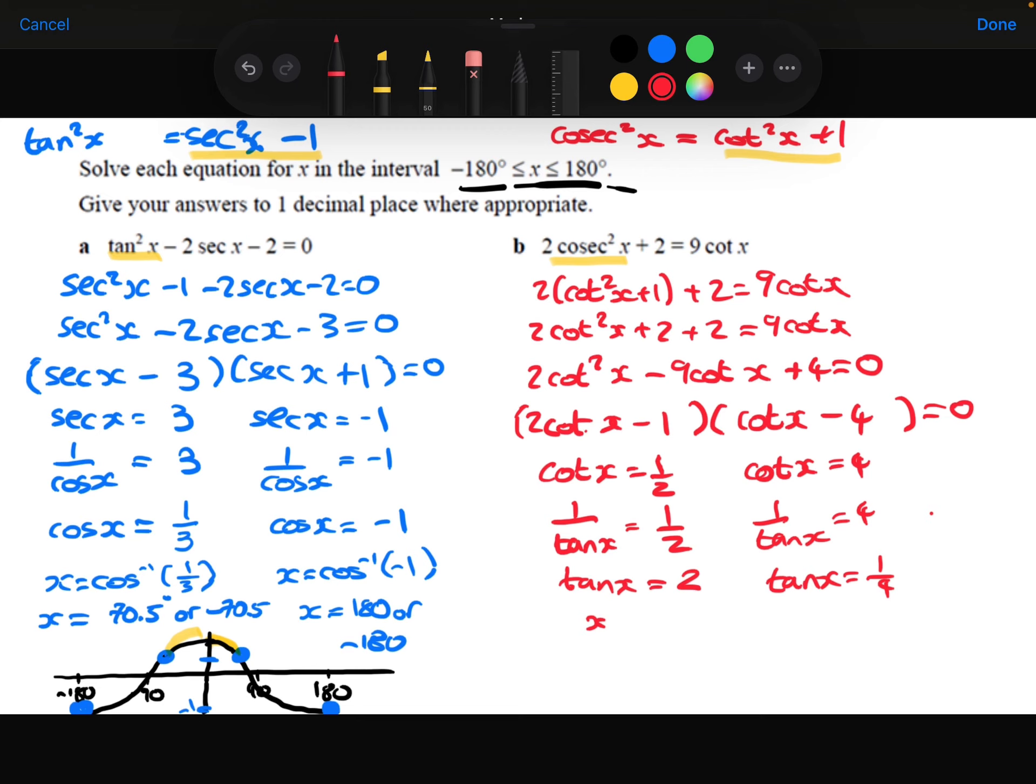So we'll now do tan inverse of each of those. So tan inverse of 2 gives 63.4 degrees. Let's draw a tan graph. I'm going to draw it up here.